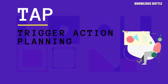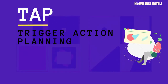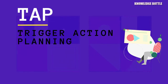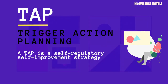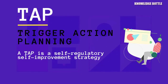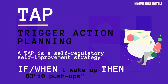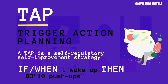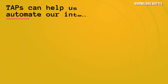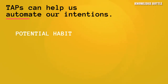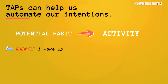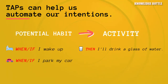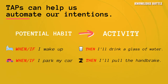And then comes in the TAP, or the Trigger Action Planning. A TAP is essentially a self-regulatory self-improvement strategy in the form of an if-this-then-that statement that can lead to better goal completion. TAPs can help us automate our intentions by linking our potential habits to a particular activity, such as when I wake up, I'll drink a glass of water.